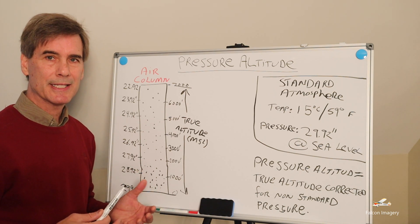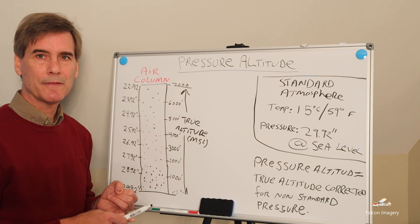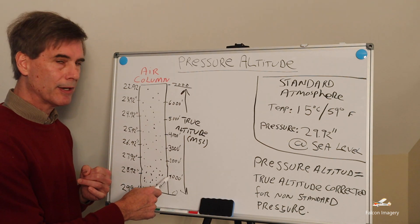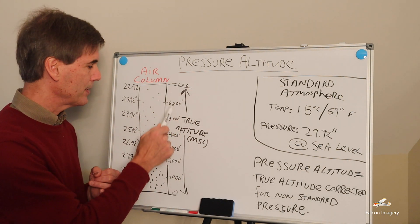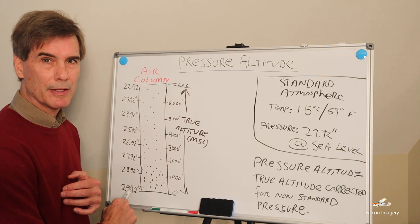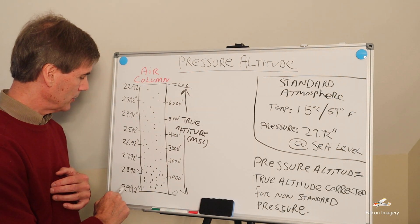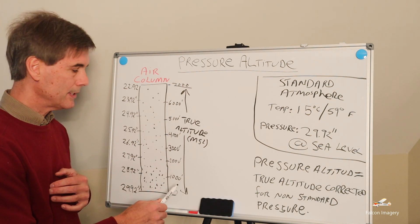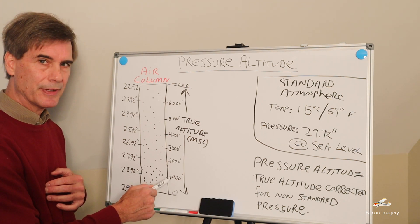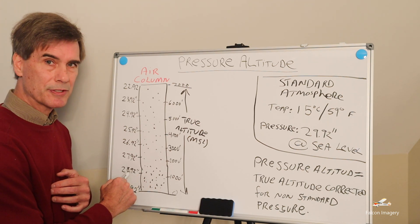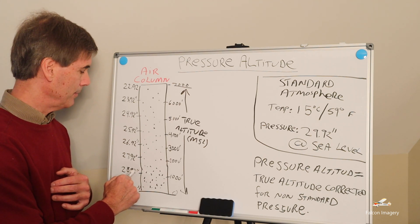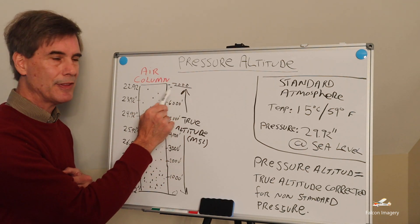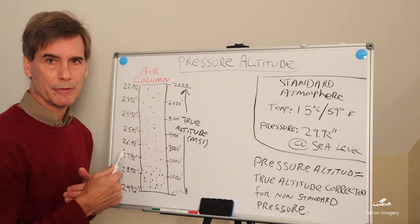Another important concept to understand is that for every thousand feet in elevation you lose about one inch of mercury. In this chart, I go from a thousand feet up to seven thousand feet and plot the inches of mercury on the barometer. At sea level we have 29.92 inches of mercury on a standard 15 degrees Celsius day. We go up a thousand feet, we drop one inch to 28.92, and continuing up to 7,000 feet we'd see 22.92 inches of mercury.